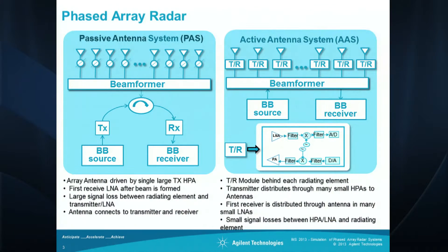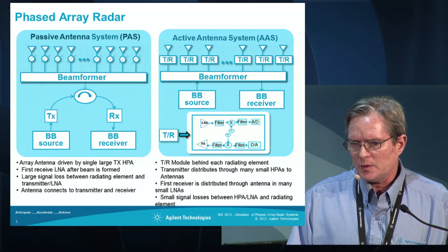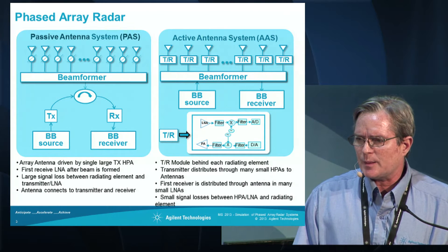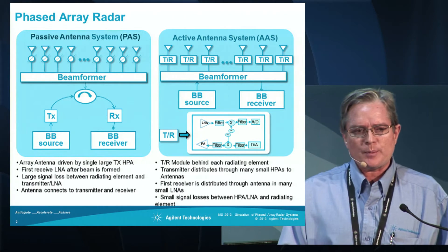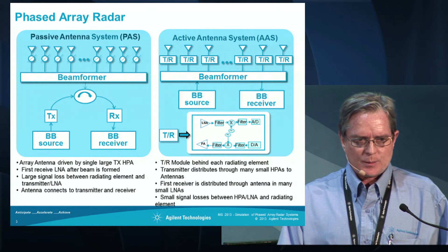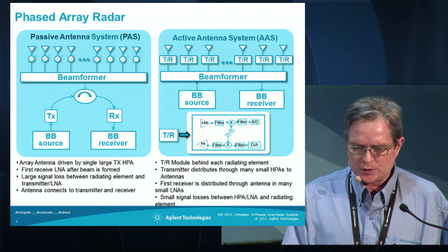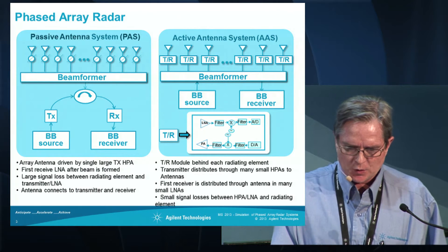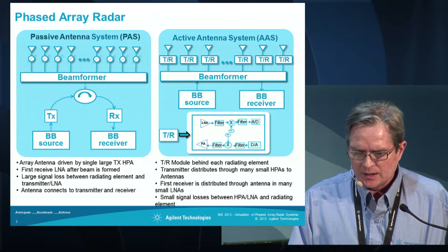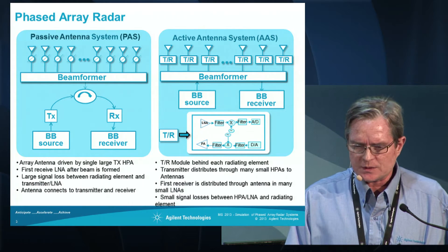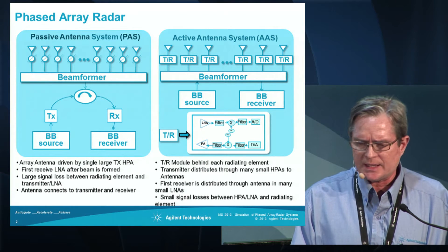On the left you see generally the traditional approach, which is the passive antennas. In that block diagram, most everything is RF. You have a transmitter source, a high power amplifier, and then you're doing some sort of beam forming with some digital control. Then the phase shifters and the antennas are all at RF.